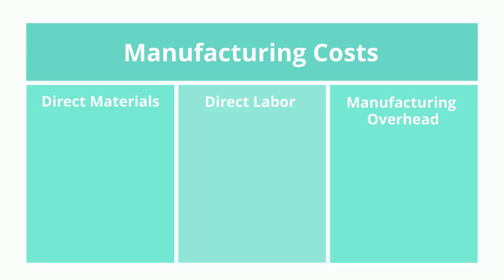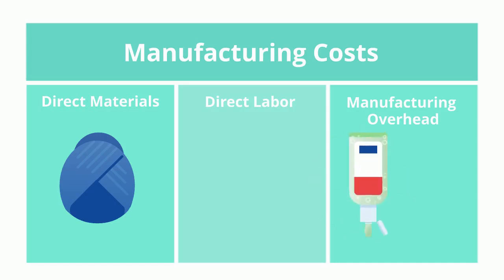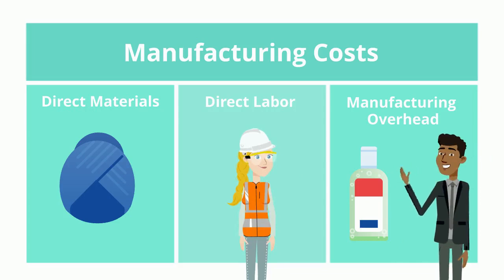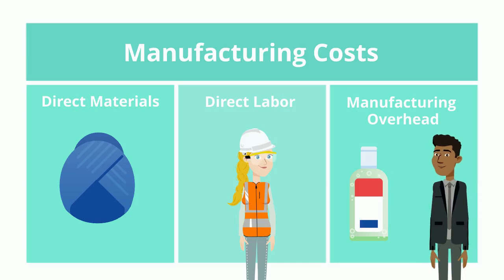Think about our sofa example. The fabric on the sofa is a direct cost — in terms of the three manufacturing costs, it is direct materials. We also talked about wood glue: while it is part of overall materials, we classified it as an indirect cost. Therefore, it is not included in direct materials but is rather included in manufacturing overhead as an indirect material. The employee who made the sofa is direct labor. The employee who supervises the factory but doesn't actually make the sofa is indirect labor, still a manufacturing cost — just an indirect one — and would be categorized as manufacturing overhead.